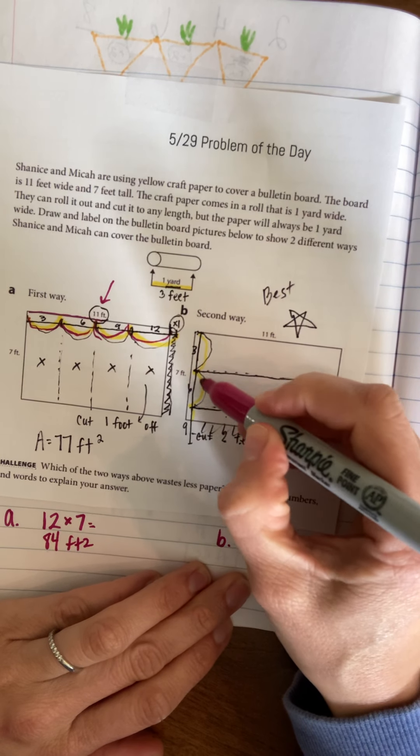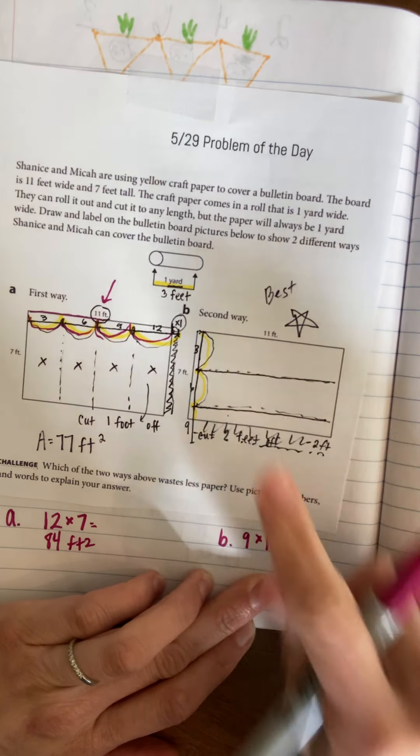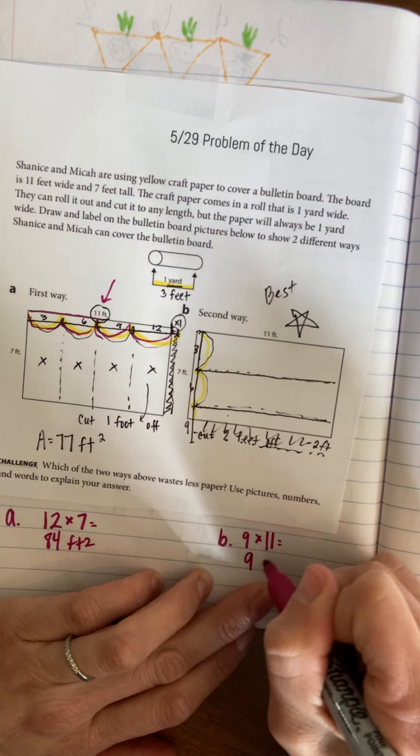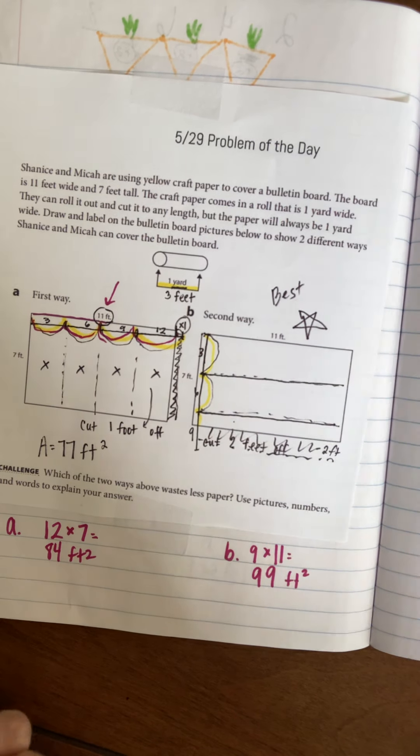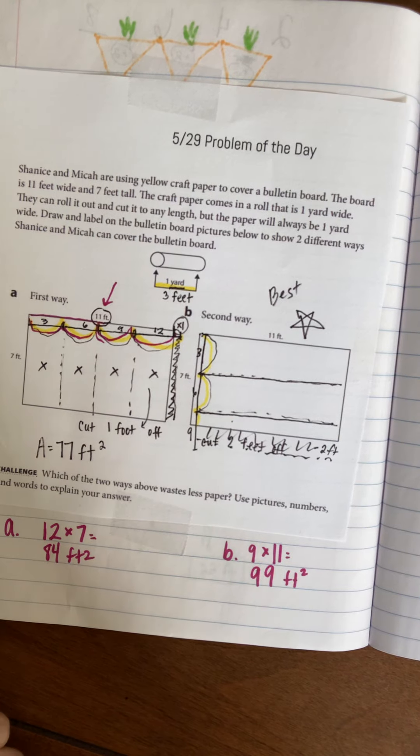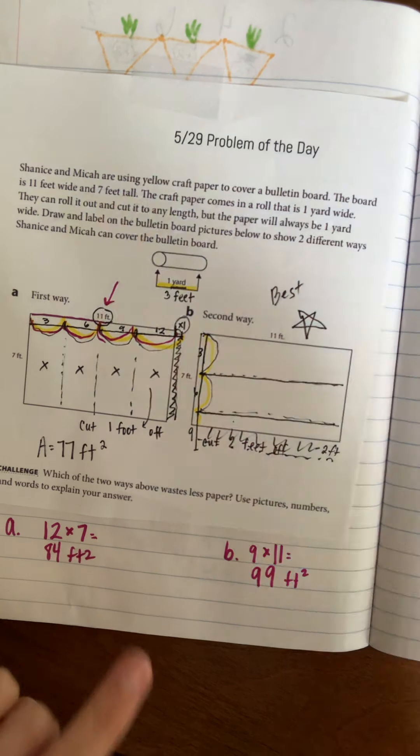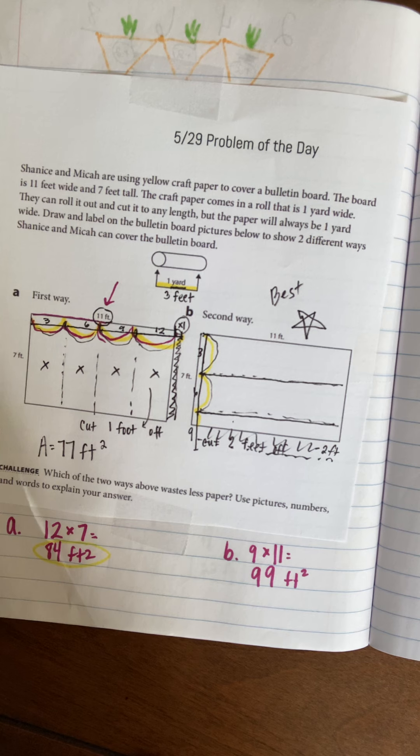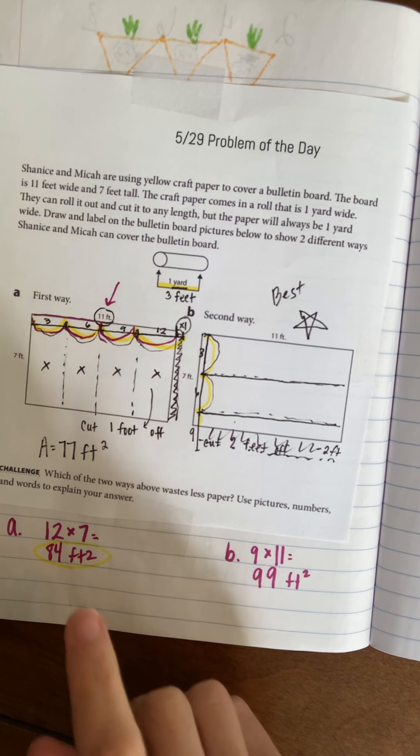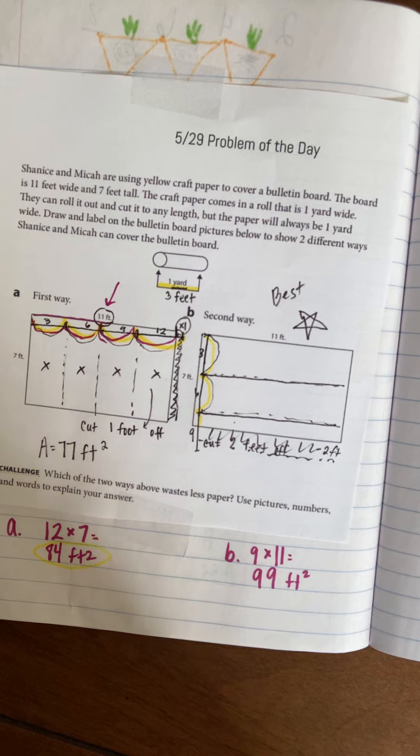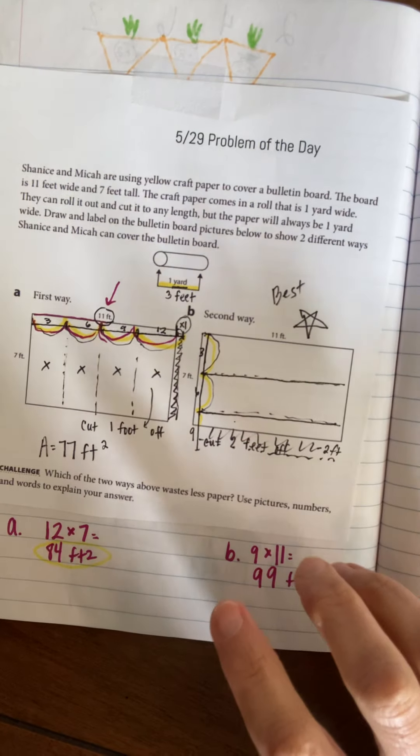For B, you used 3, 6, 9 - so 9 feet and it was 11 feet long. So 9 by 11 is 99 feet squared. It's kind of tricky - I said this one looks best because of fewer creases. However, the question asks which wastes less paper, and 84 is less. So as far as saving paper, this one is best. As far as looking better with fewer creases, this one is best.